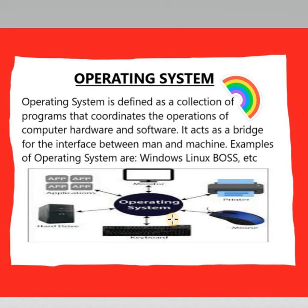Now let's understand this diagram. The operating system connects a monitor, keyboard, printer, mouse, applications, hard drive — all of these hardware components. Keyboard is a hardware, mouse is a hardware, applications is a software. All of these work to connect with each other, to easily communicate with each other through the operating system.